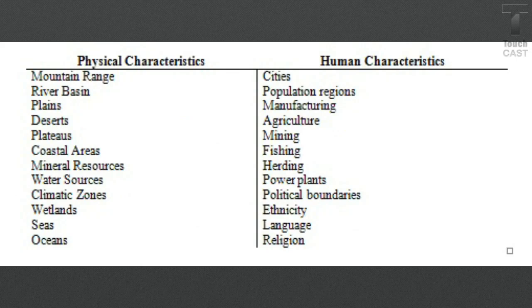Then you also have the human characteristics side of the T-chart. This could be your cities, your populations, your fishing, your political boundaries — those kinds of things. That's what we're looking at when we look at human characteristics.